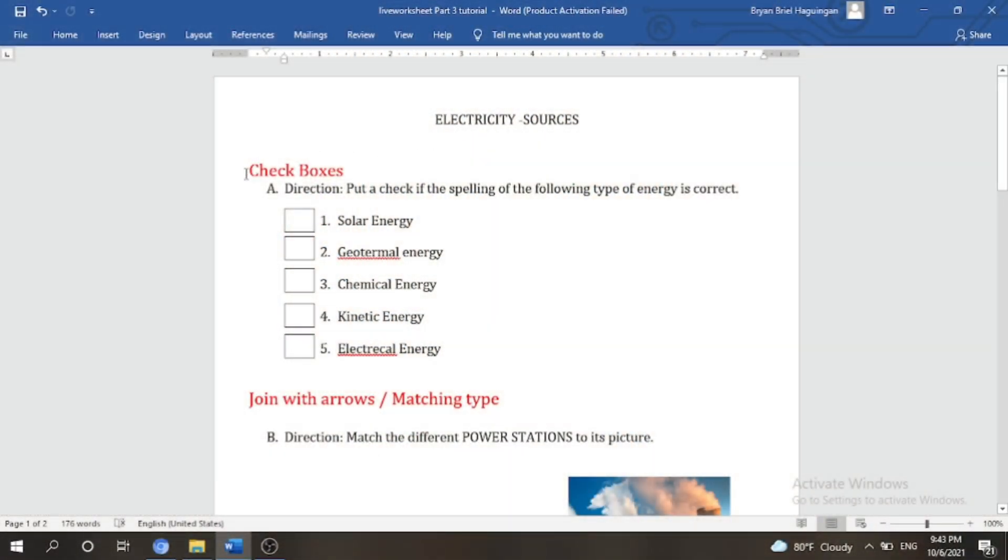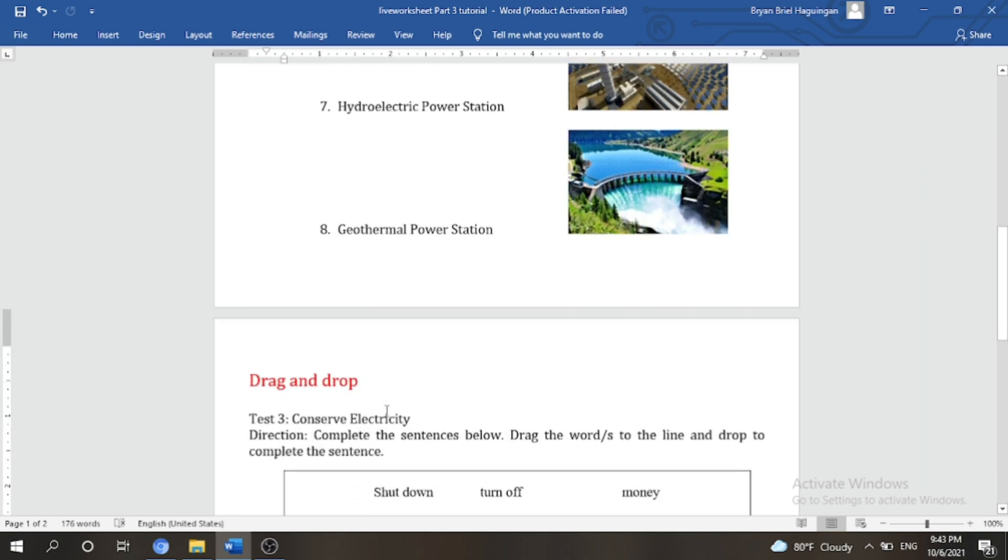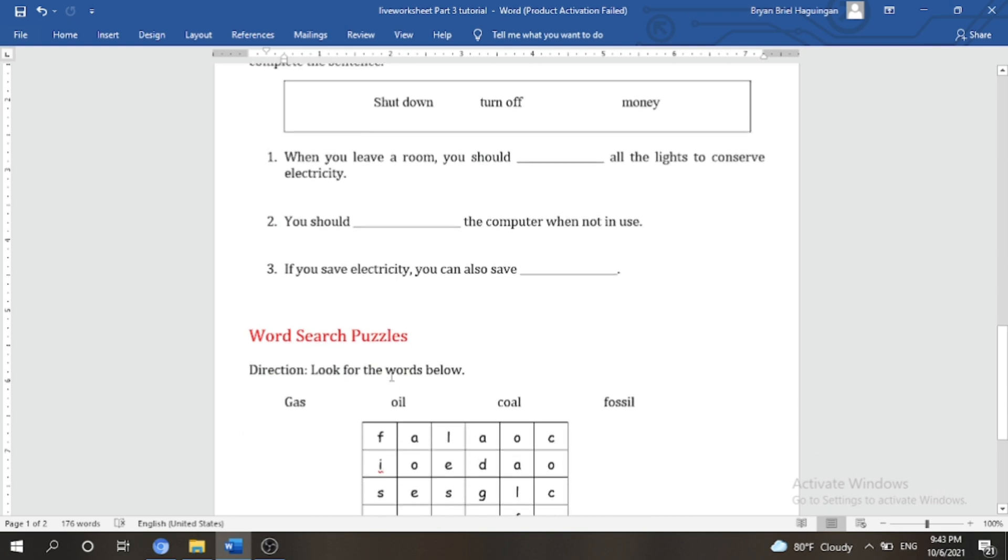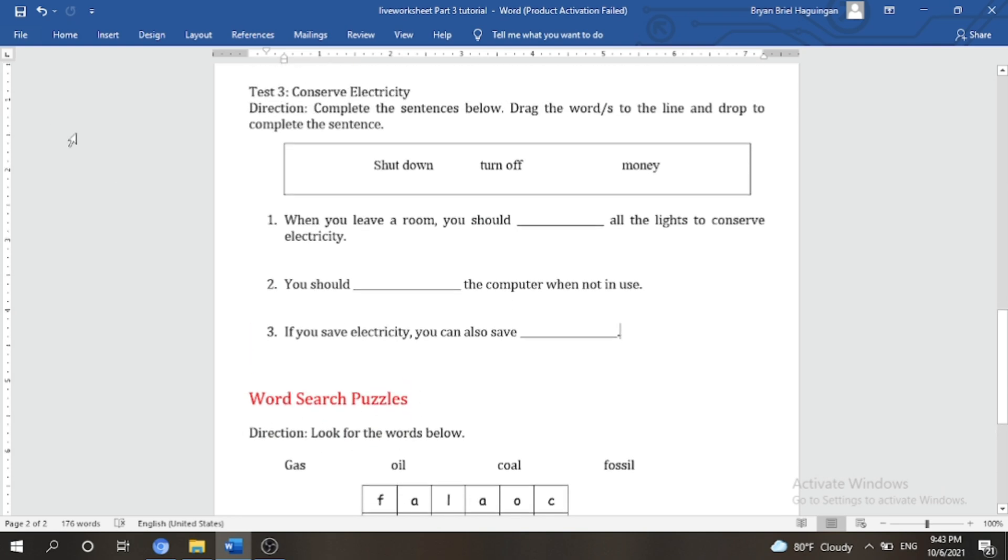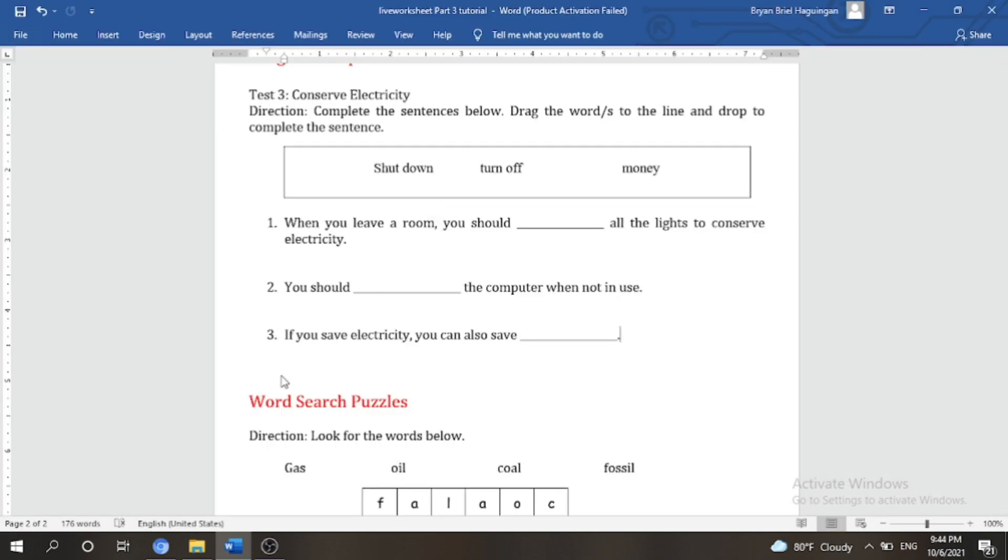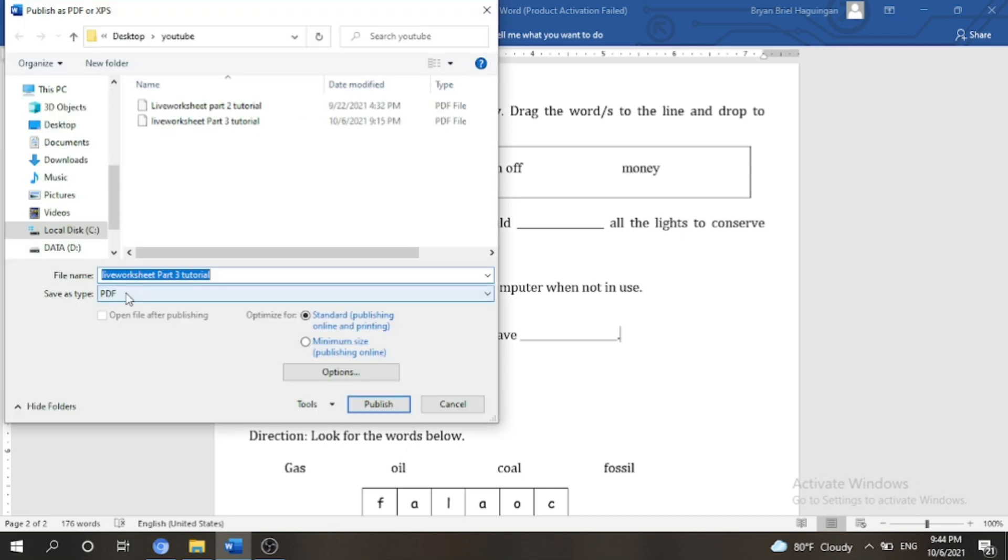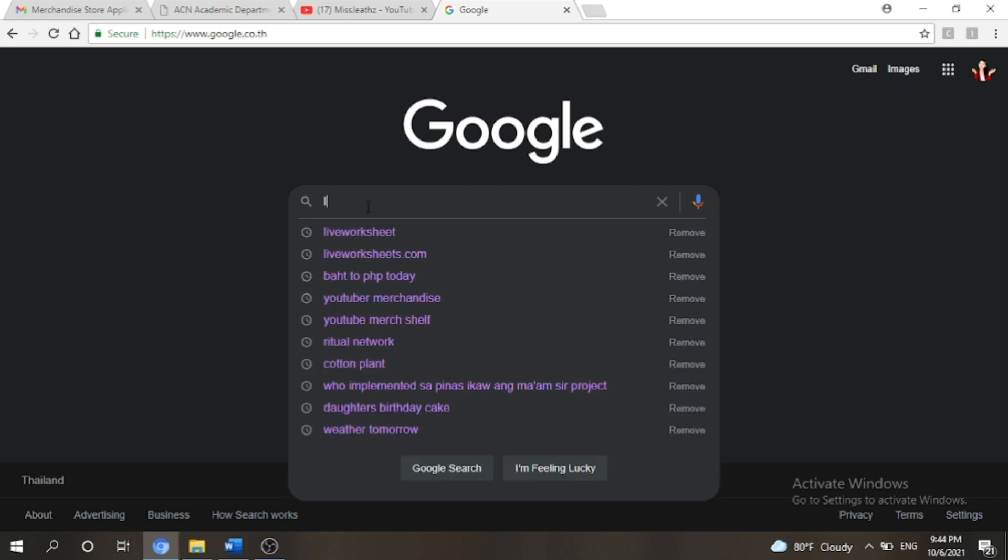First things first, we need to prepare the worksheet. So I already have here the check boxes, join with arrows or the matching type, drag and drop, and the word search puzzles. So we need to export this one or change the file into PDF so we could use it and it would be downloaded in the live worksheet website. So there you go, now let's go to the website.